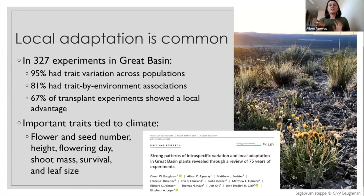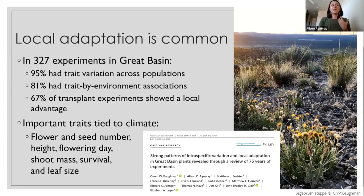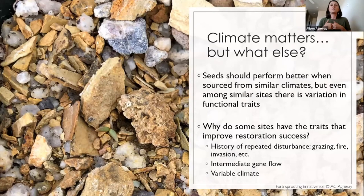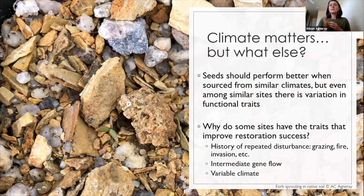We found that in studies from the last 75 years, 95% showed trait variation across populations and 67% showed a local advantage over non-local plants. Most of this local adaptation work really focuses on the impacts of climate on plants. But still we see significant differences in traits within plant populations coming from very similar environments and even the same seed zones, so climate doesn't really account for all of this trait variation. We think there must be some other biotic factors shaping these plants, like disturbance history or gene flow.